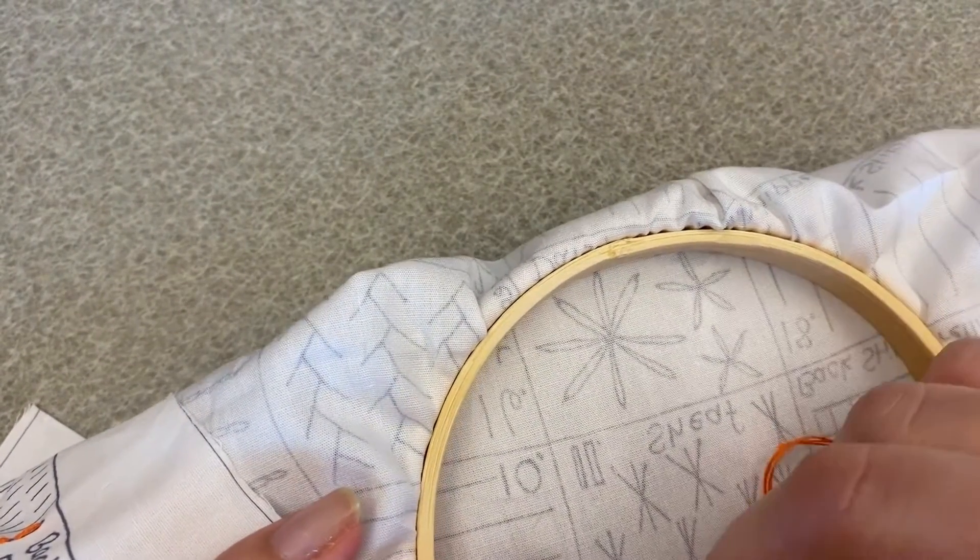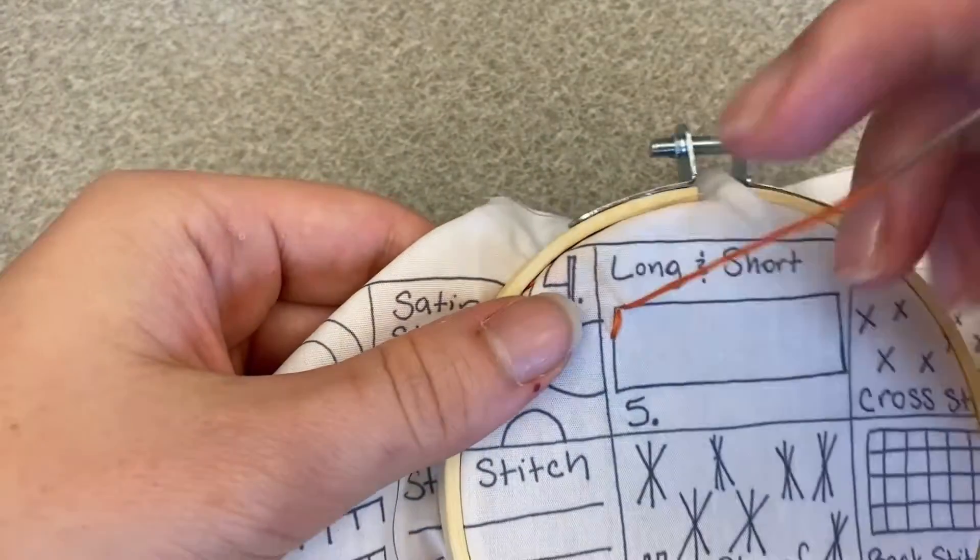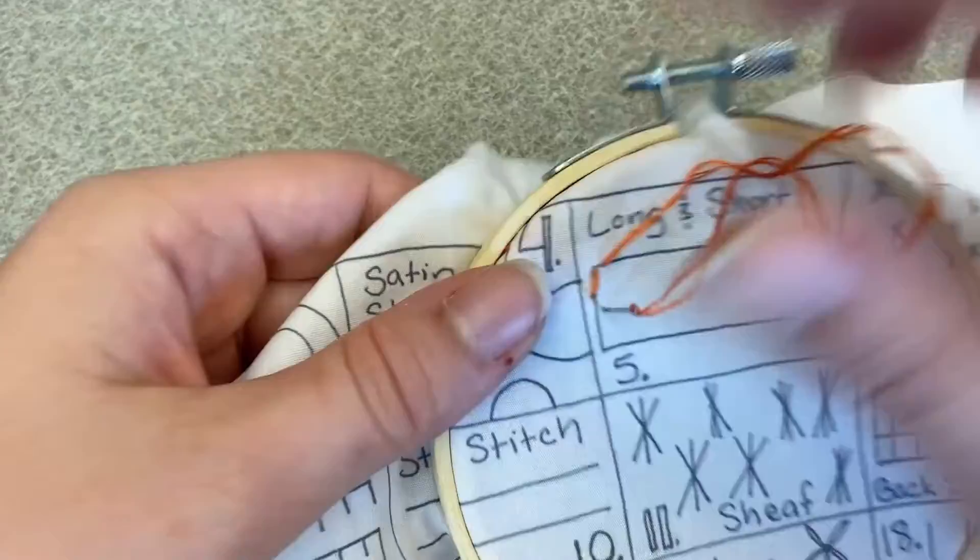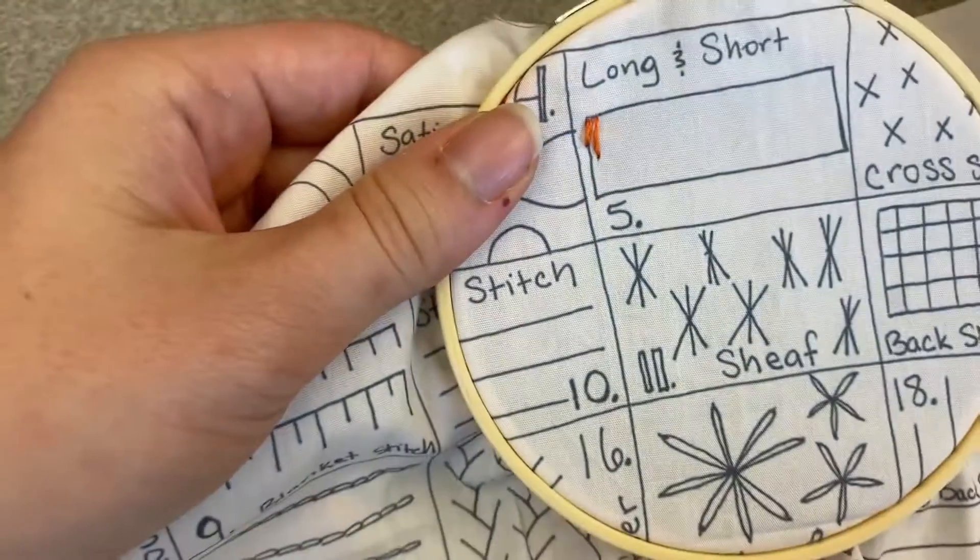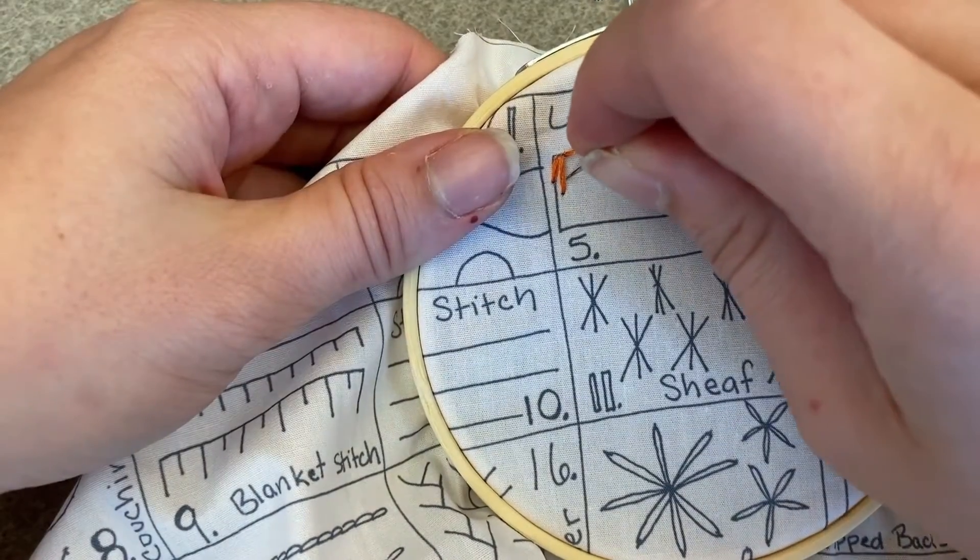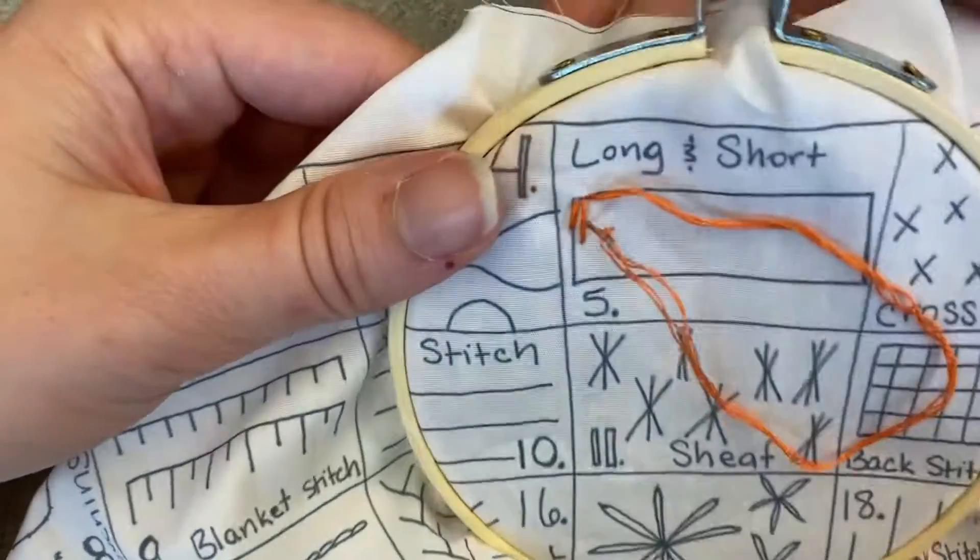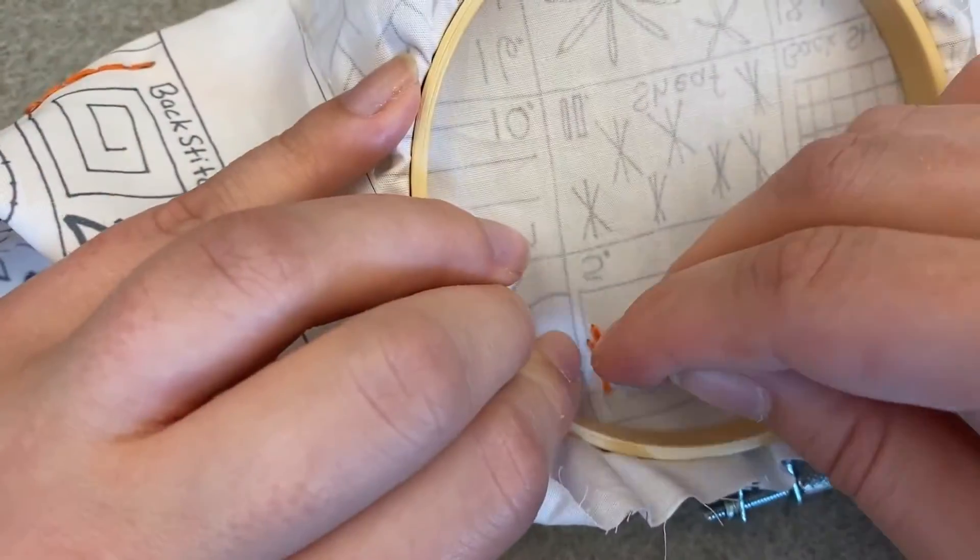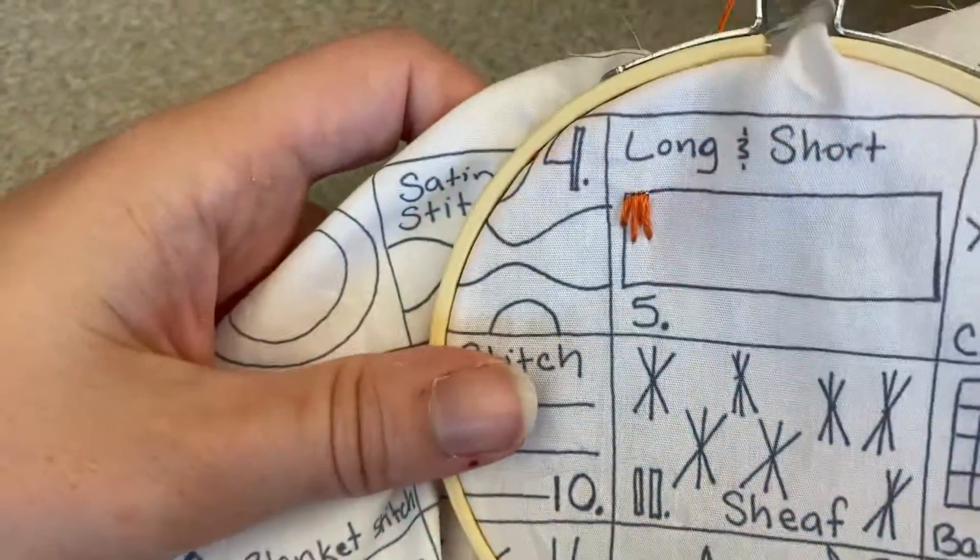And what you're going to do is you're going to make a new line right next to the stitch that you just made. And now you're going to make it longer, like that. But you kind of want your stitches to be closer together.